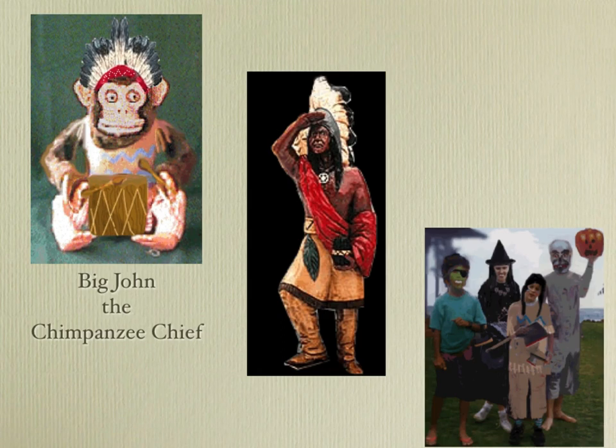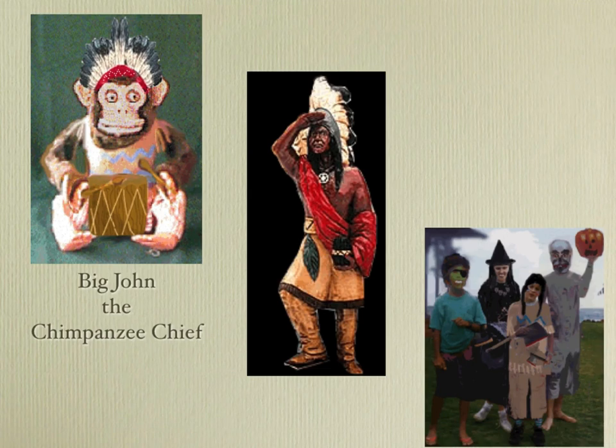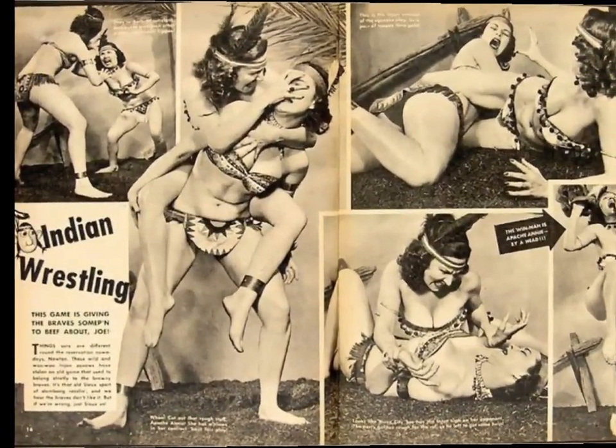Pocahontas is a wild exaggeration. The actual Pocahontas was a young pre-pubescent teen, probably around 13 or 14 years old, bald for hygienic reasons, and covered in a red paste used as mosquito repellent. But Disney has taken hold of these images and presented Pocahontas in a way that suggests she is more European than she was actually Native American.